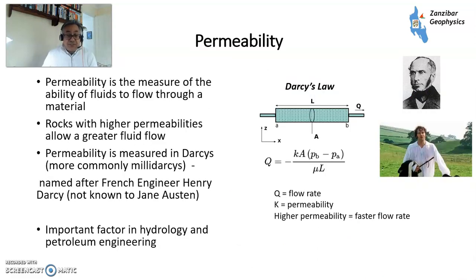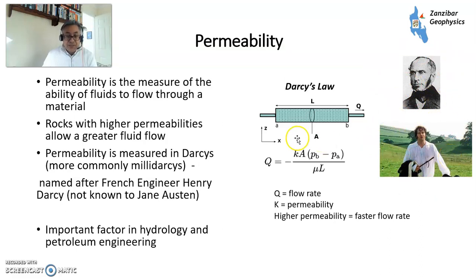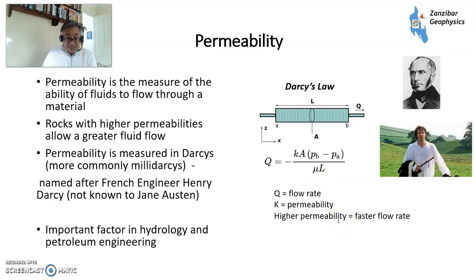Permeability is the measure of the ability of fluids to flow through a material — obviously very important in hydrology and petroleum engineering. It was invented by a Frenchman called Henry Darcy. Darcy's Law: Q is the flow rate, K is the permeability, A is the cross-sectional area of the sample, L is its length, and there are various constants including mu. Higher permeability equals higher flow rate. It's measured in Darcys, but more commonly milli-Darcys.